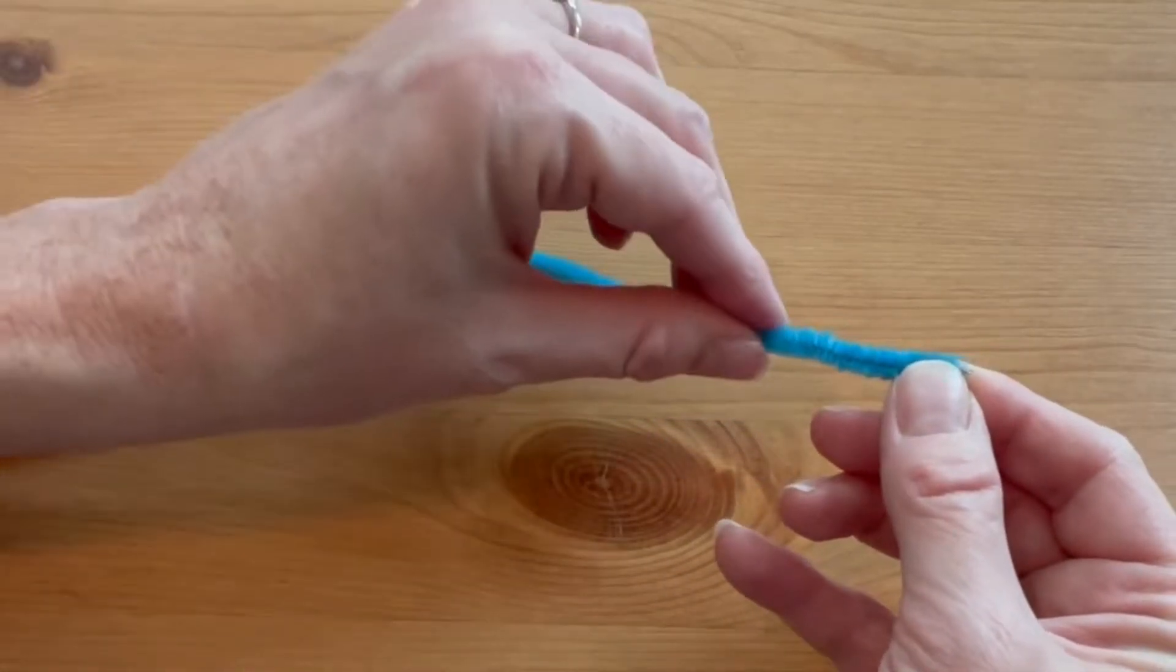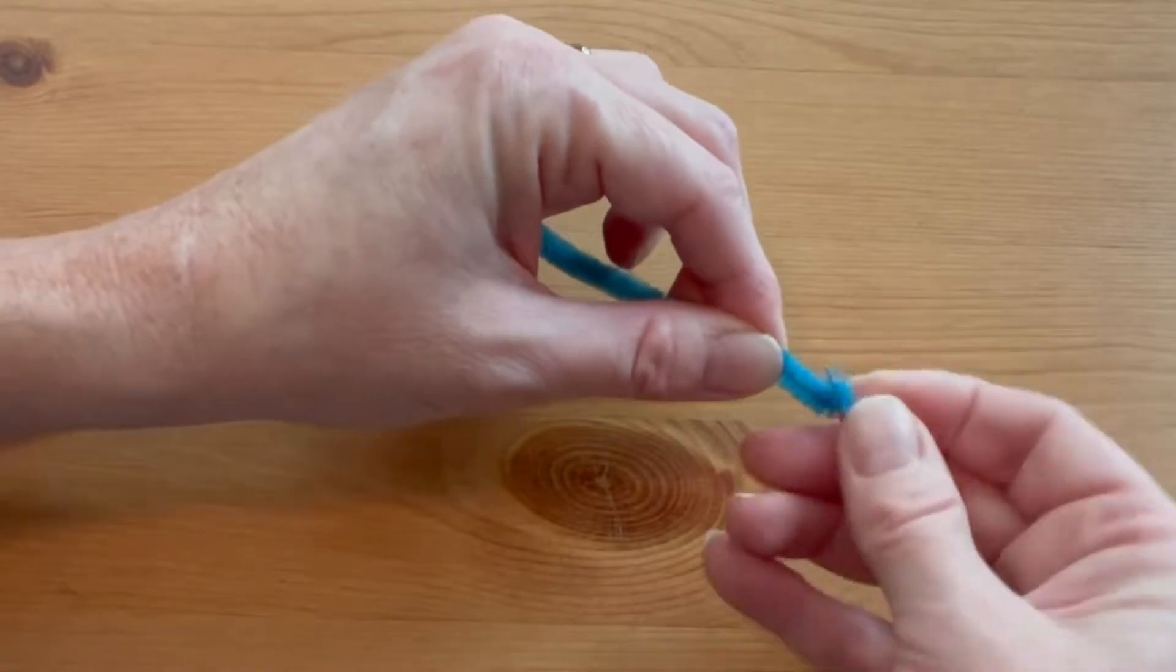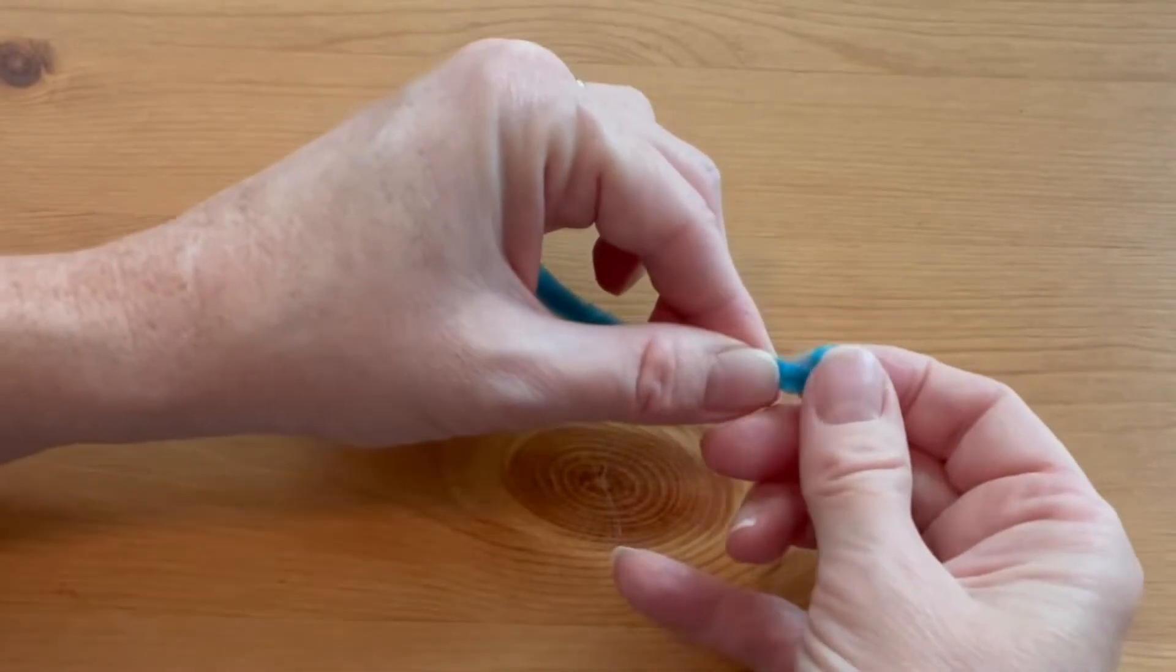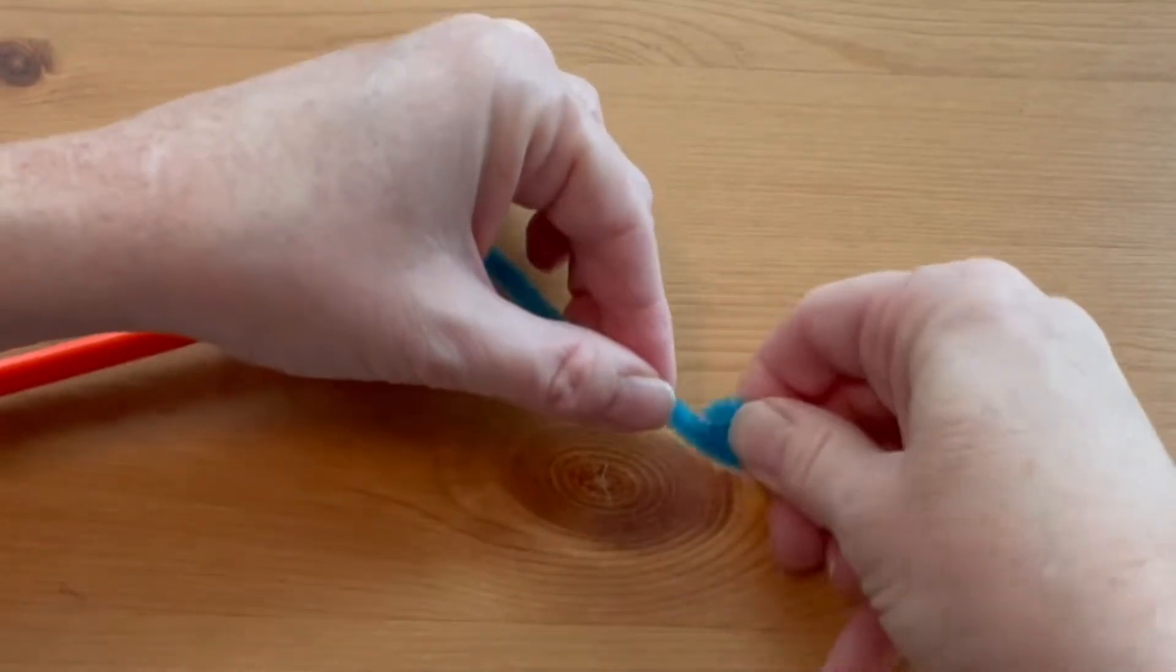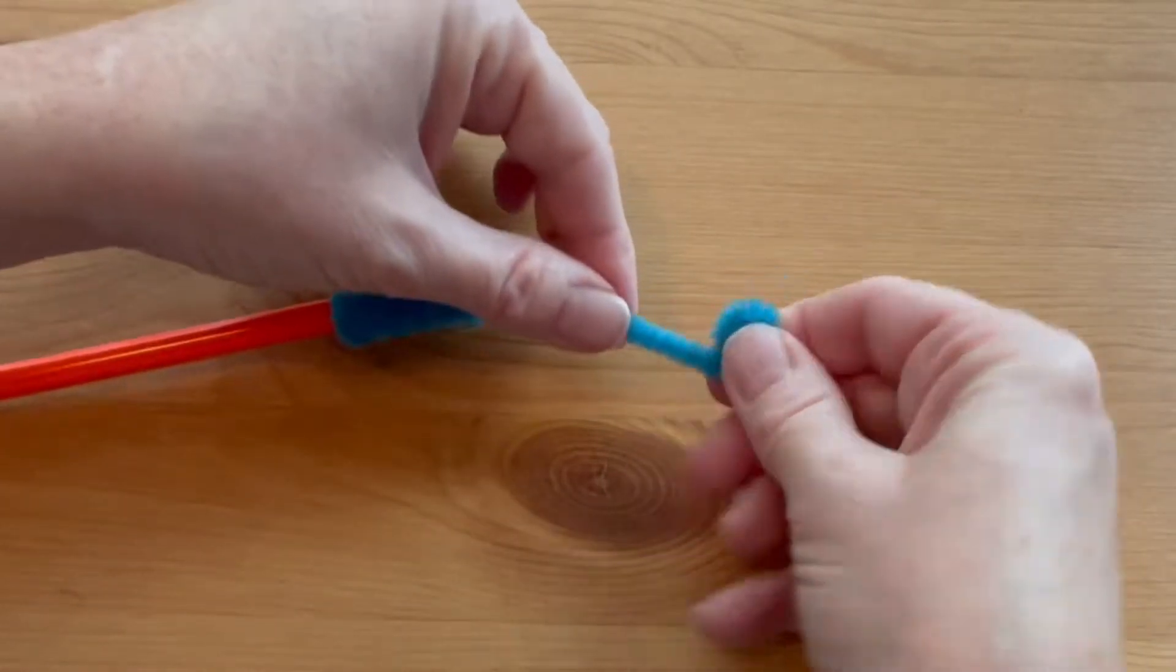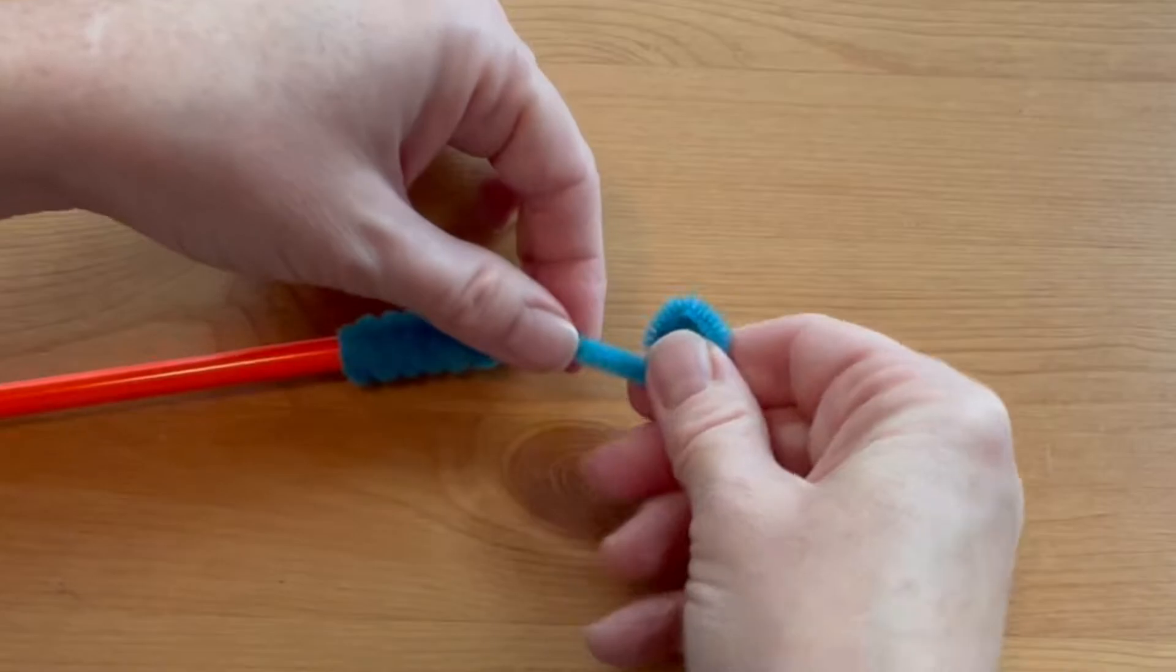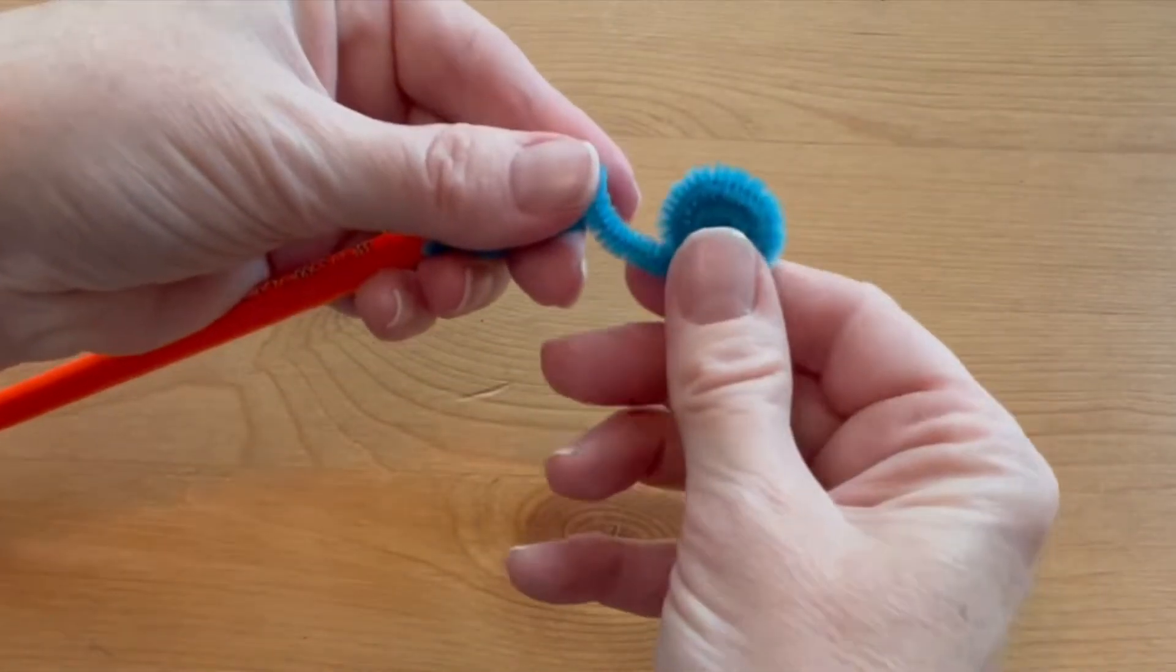Now with the tail end, you're going to tightly coil that end down and continue coiling until you get to the end of the pencil. Make sure you keep it round.